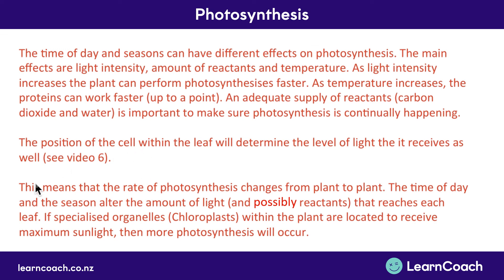In conclusion, the rate of photosynthesis changes from plant to plant. The time of day and season alter it mainly because of the amount of light reaching the leaf. The location of specialized organelles (chloroplasts) within the plant also affects how much sunlight is collected — whether they're near the top of the leaf or whether the leaf is in a sunny spot not covered by other leaves. That is photosynthesis.